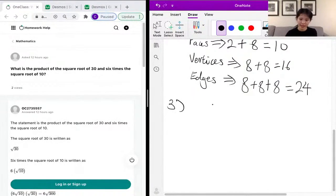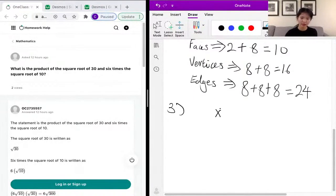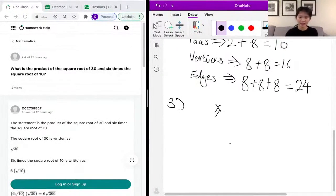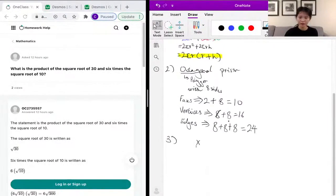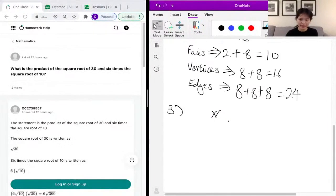First, it's asking for the product, which means multiplication. It's telling us the product of the square root of 30 and 6 times the square root of 10, which is 6 root 10. So it's basically asking us root 30 times 6 root 10, so you want to multiply those things together.